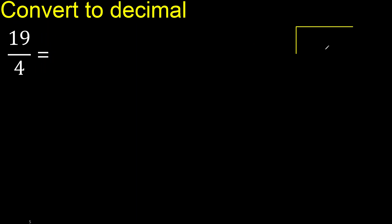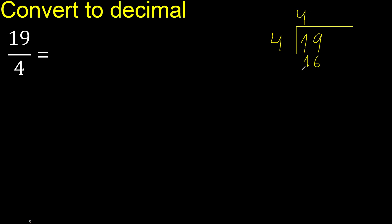19 divided by 4. 19 is not less than 4, so we find: 4 multiplied by which number is nearest to 19 but not greater? 4 multiplied by 5 is 20, which is greater. 4 multiplied by 4 is 16 — that is not greater, so 16 is ok.